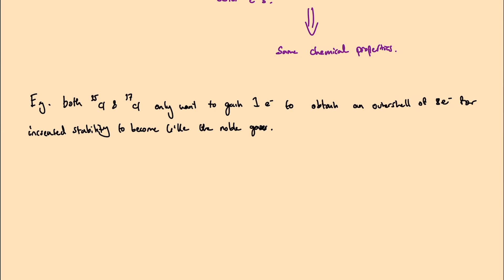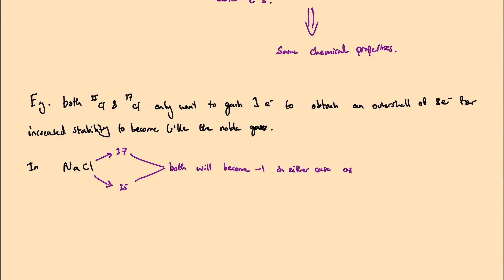To provide a further example, let's take NaCl, table salt. Whether the chlorine atom in NaCl has a mass number of 35 or 37, in both cases that chlorine atom will be a negative ion of minus one. Both will have a charge of minus one because both wanted to gain one electron from sodium. Therefore, they have the same chemical properties, and from this we can say that isotopes have the same chemical properties.